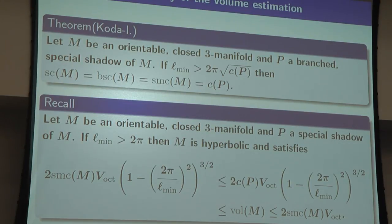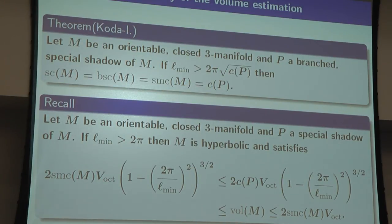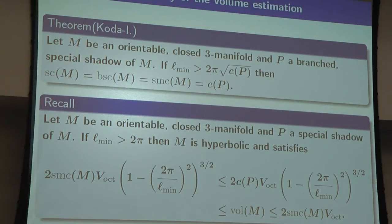This is at least a little surprising to me, because usually determining a lower bound is really difficult. However, this theorem says: if you choose a branched special shadow with gleam large enough — not necessarily very large — then you have some three-dimensional manifold and immediately we can say the complexity is this one. We can determine it for infinitely many three-manifolds. Thank you.